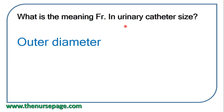1 French equals 1/3 millimeter, so 1 millimeter equals 3 French. Therefore, a 14 French catheter has an outer diameter of 14/3 = 4.66 millimeters.